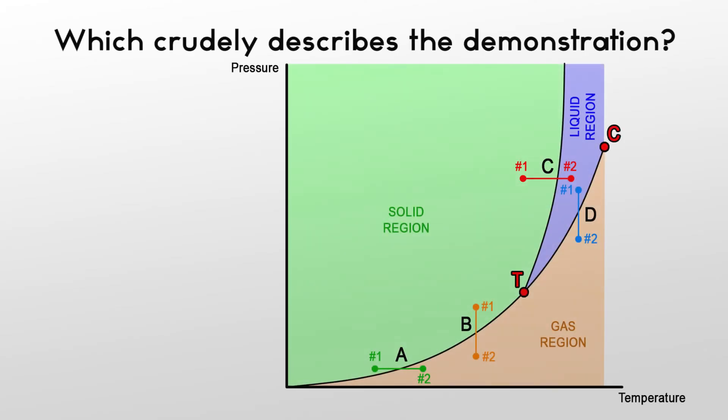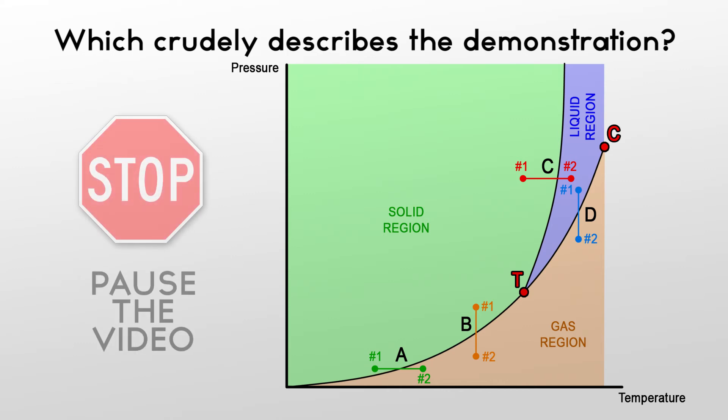Identify which of the phase transitions, from the first state to the second state, shown on the carbon dioxide PT diagram crudely describes the demonstration we have just seen. Explain your reasoning on a piece of paper. Your instructor will now stop the video.